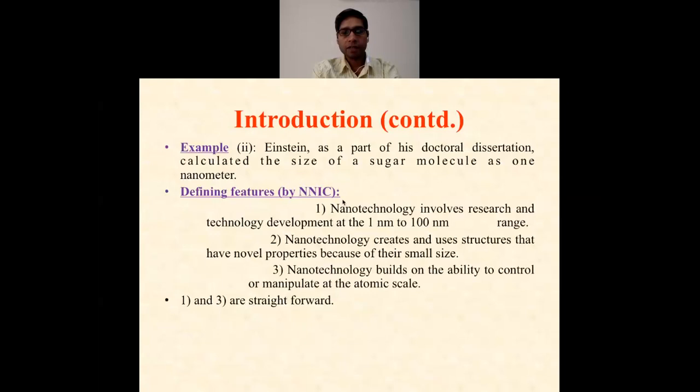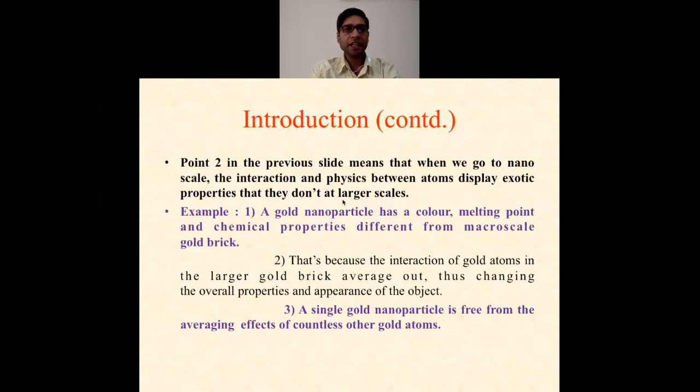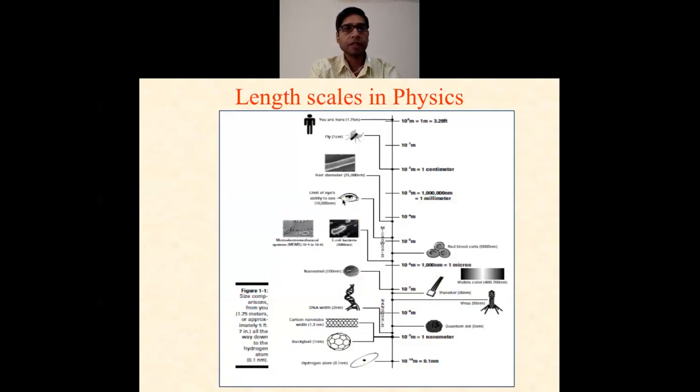From this, you can see point one and three are straightforward, but point number two is not straightforward. When we go to the nanoscale, the interactions and physics between atoms display exotic properties that do not exist at larger scales. When you move from bulk to nano, some properties may appear or disappear depending on the system. For example, a gold nanoparticle has a color, melting point, and chemical properties different from macroscopic gold bricks. That's because the interactions of gold atoms in larger gold bricks average out, thus changing the overall properties. A single gold nanoparticle is free from the averaging effect of countless other gold atoms.